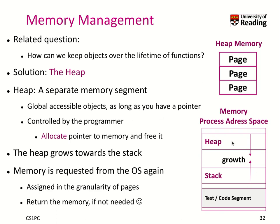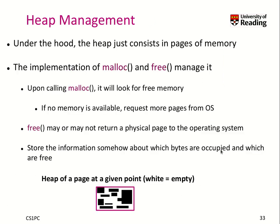If you no longer need those global objects, you should free them. Many programs continuously grow in their memory demand — this typically happens when the programmer allocated some data on the heap but forgot to free it. That's a typical problem. Under the hood, the heap is just pages of memory, and we have implementations of malloc and free, which are the functions to allocate and free data on the heap that manage it.